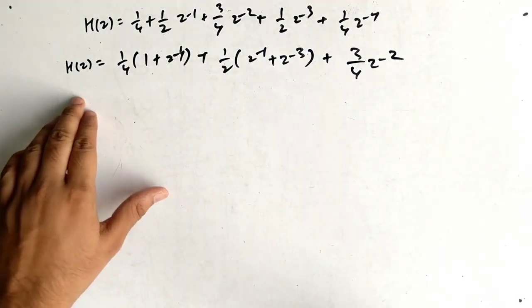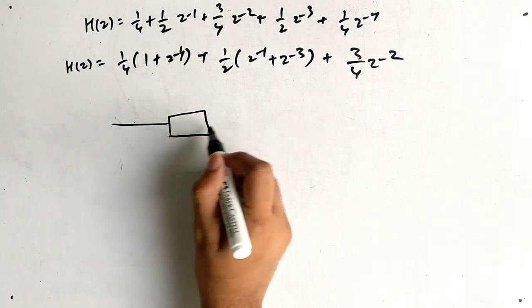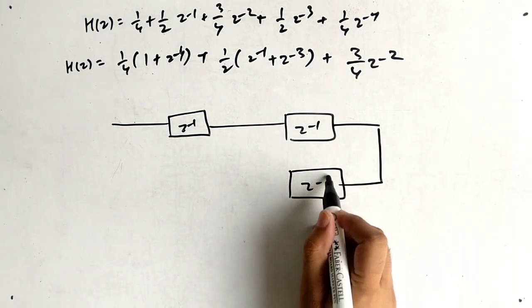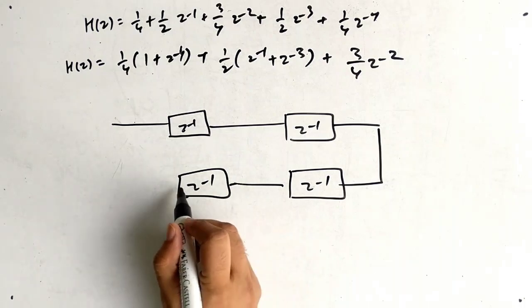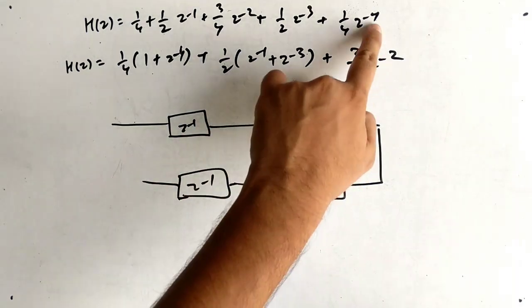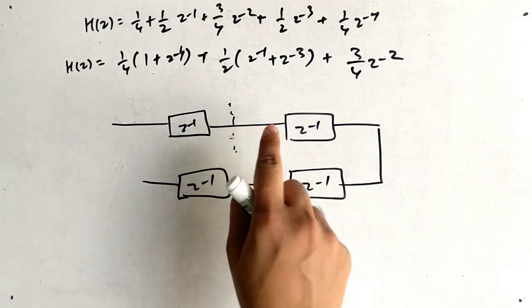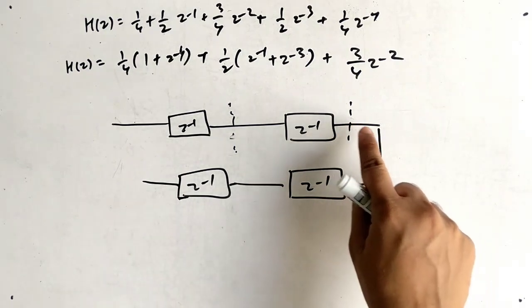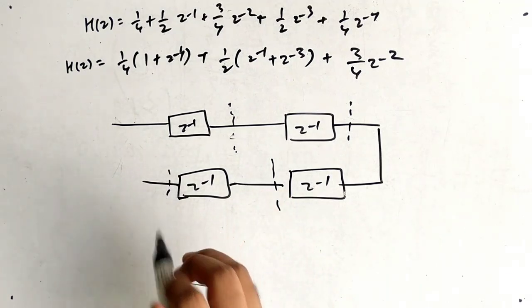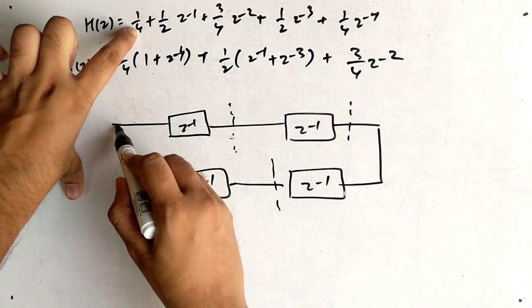Draw four delay boxes in series: z⁻¹, z⁻¹, z⁻¹, z⁻¹. The first tap is z⁻¹, the second z⁻², the third z⁻³, and the last z⁻⁴. We identify each area along the delay chain, since H(z) has terms up to z⁻⁴.